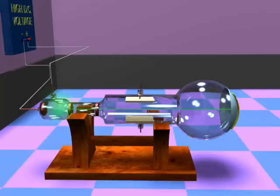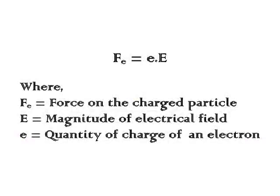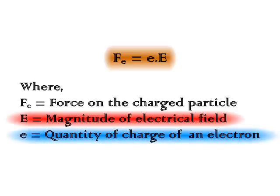The beam over here passes between two parallel aluminum plates. When they are connected to a battery, the beam experiences an electric field in this direction and experiences a force in the opposite direction. The magnitude of this force is given by FE equal to eE, where E is the magnitude of the electrical field and e is the quantity of charge of an electron.